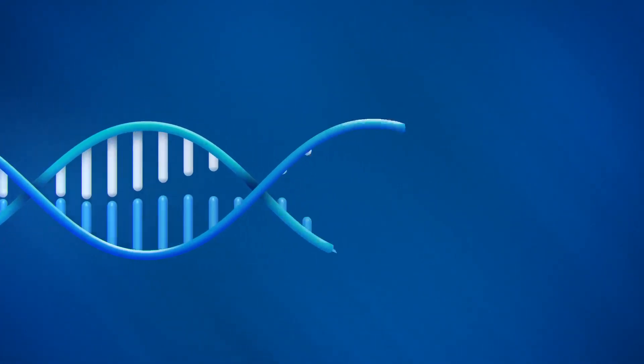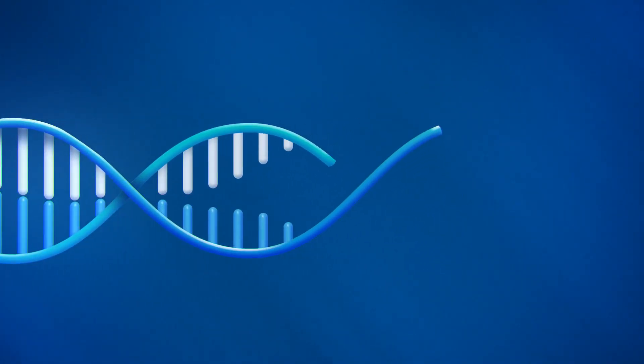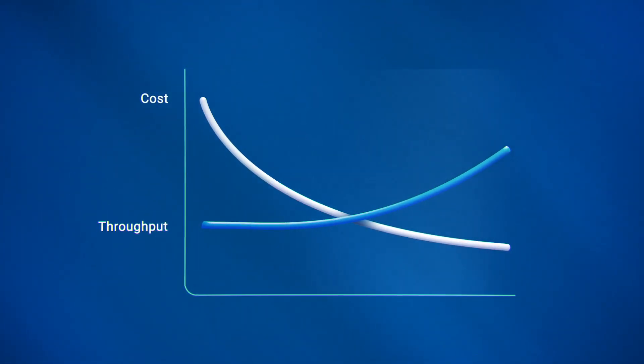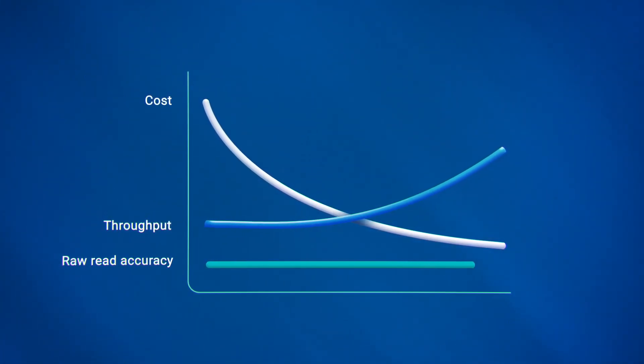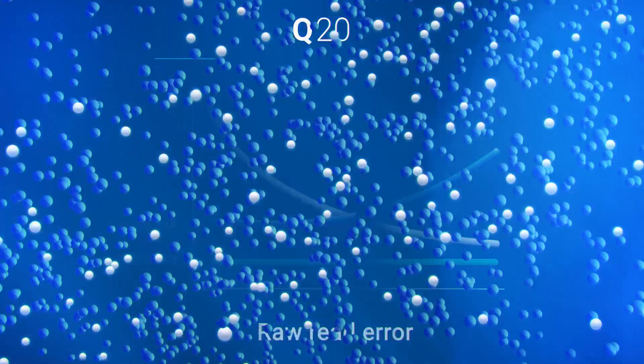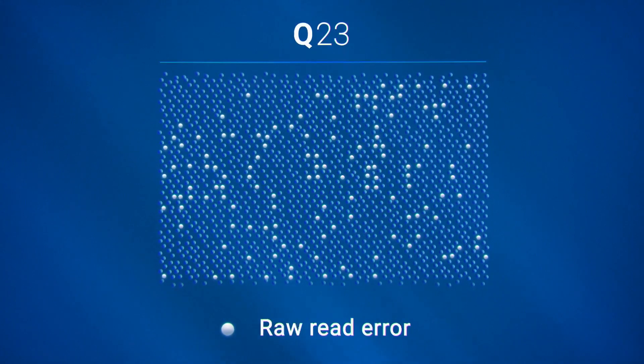Next-generation sequencing technology has steadily improved in the areas of cost and throughput. But an equally important metric, raw read accuracy, has remained relatively unchanged. Until now.